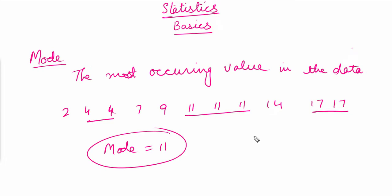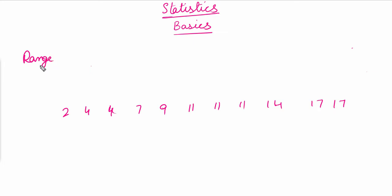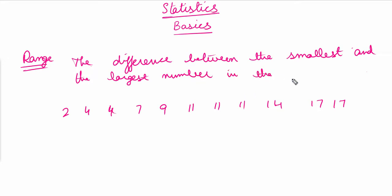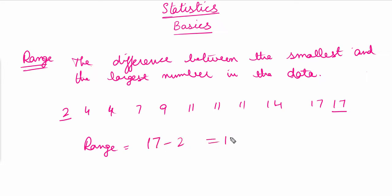The next thing to discuss is the range. Range is basically the difference between the smallest and the largest number in the data. For this data, the biggest number is 17 and the lowest number is 2, so the range is equal to 17 minus 2, which equals 15.